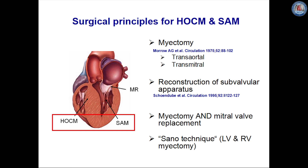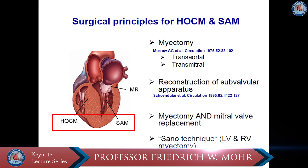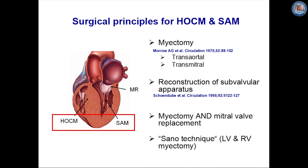A very old approach is the myectomy combined with mitral valve replacement, favored by Dr. Cooley and others. Lately, Dr. Sano has described a technique which is a myectomy approach through the right ventricle, incising the septum and going very deep into the left ventricle, with a patch placed on the right side of the right ventricle to enlarge the LVOT. One can also mention a transapical approach described by the group at the Mayo Clinic by Jeff Hartzler.